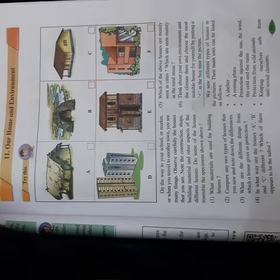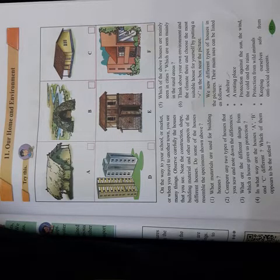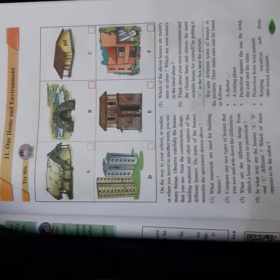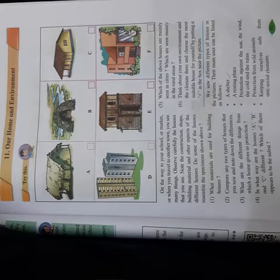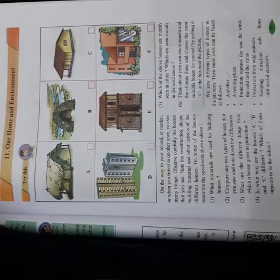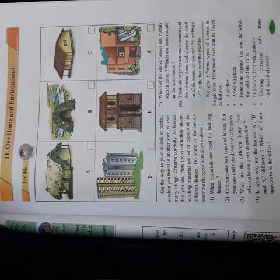The first one, A, is a hut — built with straws, wood, and wattle and daub. Mostly this type of house we see in very remote, small villages. Then B is made up of leaves and bamboos. This type of house was used by ancient people and is not commonly seen now. And then C — you will see this kind of house in most places, in cities as well as in villages.